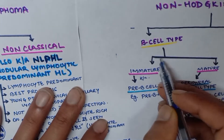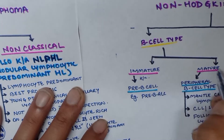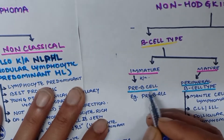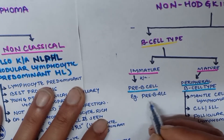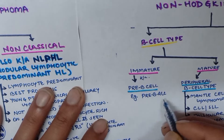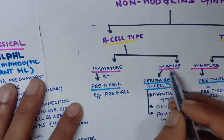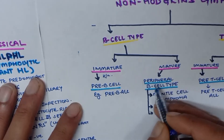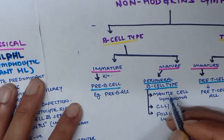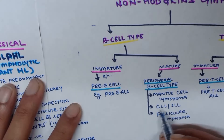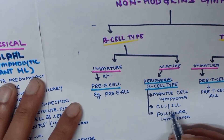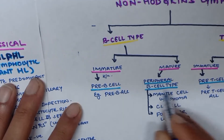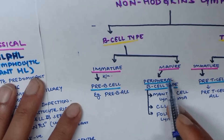In the B-cell type, the immature form is called precursor B-cell, with the example being pre-B ALL. The mature type is known as peripheral B-cell type, with examples including mantle cell lymphoma, CLL or SLL (chronic lymphocytic leukemia and small lymphocytic lymphoma), and follicular lymphoma.